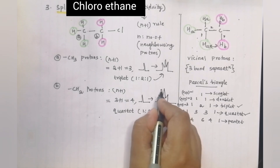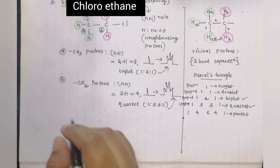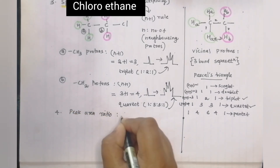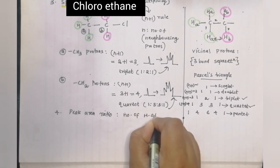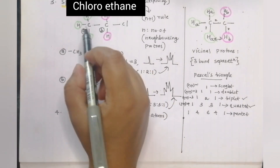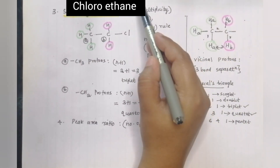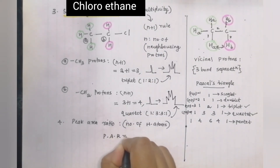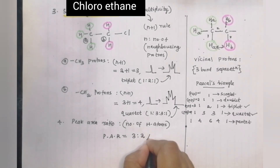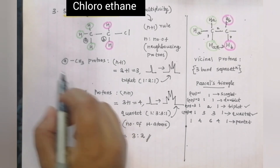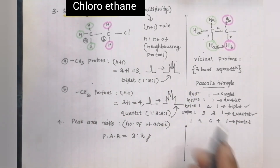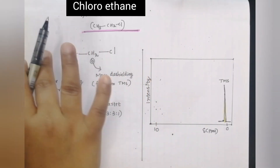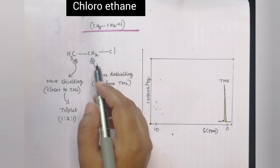The last point is the peak area ratio, which indicates the number of hydrogen atoms present in the compound. The peak area ratio is equal to 3 to 2, corresponding to CH3 (3H) and CH2 (2H). This is the last spectrum summary after all the details are compiled.